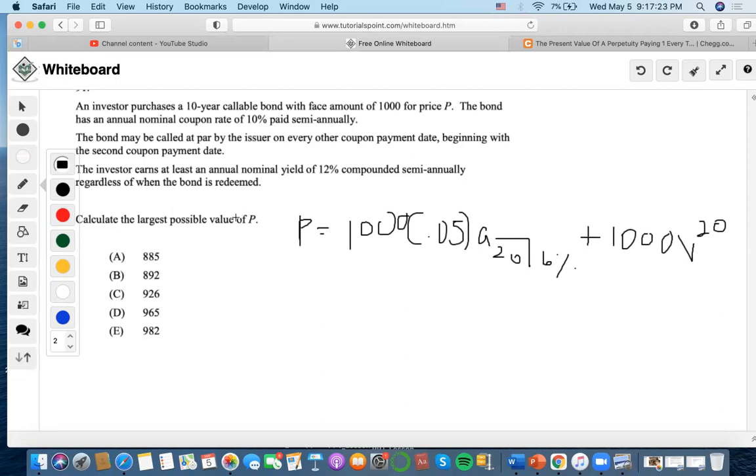Largest value P. So, basically, when they're asking for the largest possible value of a price, they want to actually find the lowest one. Because why would we want to pay for the bond at a really high price, right? That's one.